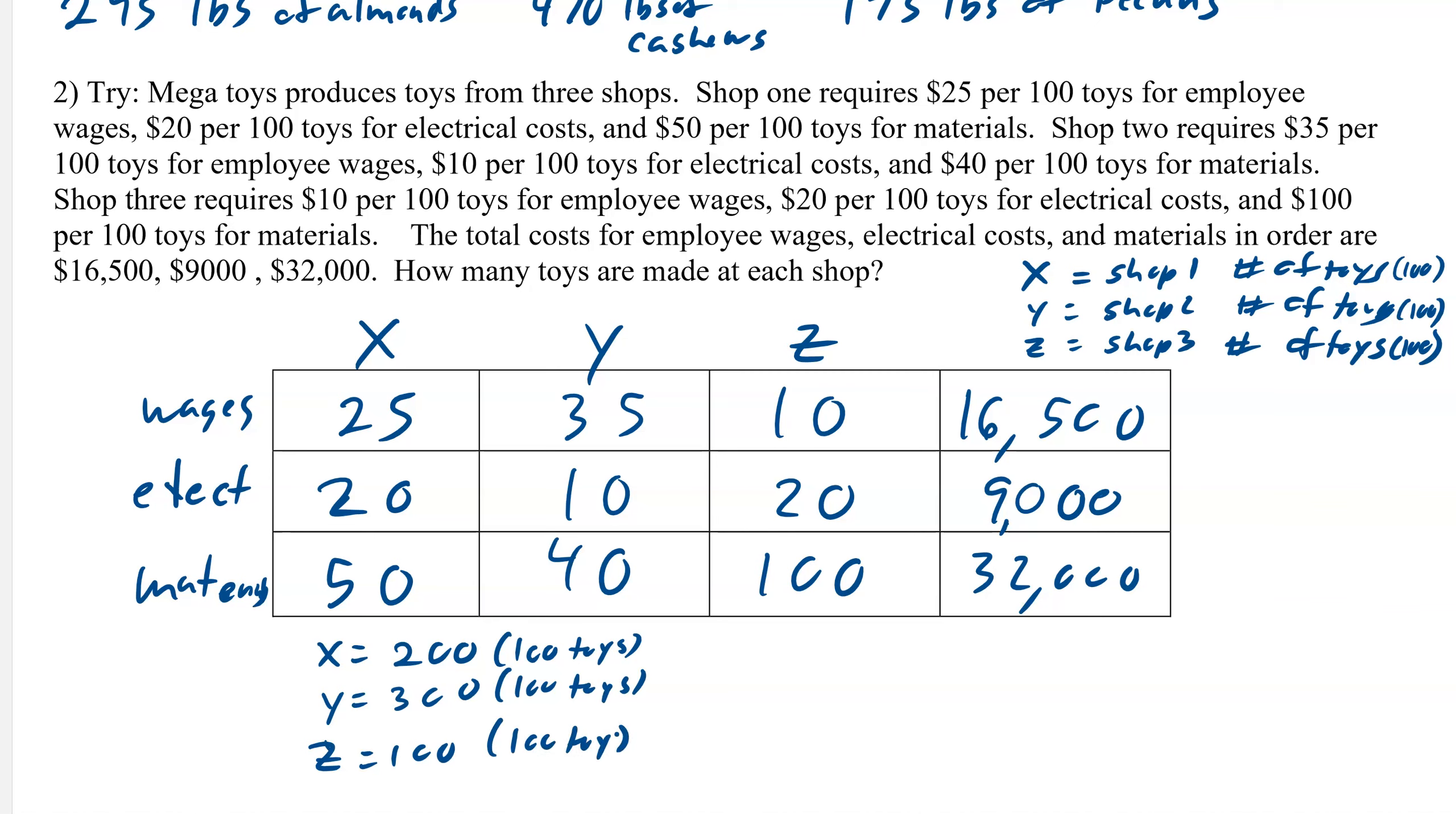We have to put the units on there. So this really becomes 200, and then two more zeros. So 20,000 toys are being made by shop one, 30,000 toys are being made by shop two, and 10,000 toys from shop three. So there you go, how you solve them. Thank you.